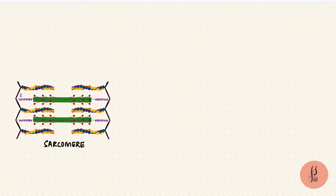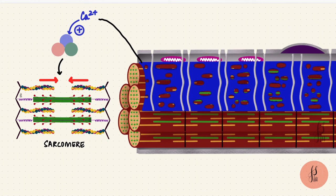What starts the process of contraction is calcium binding to troponin C. For the calcium levels in the sarcoplasm to rise, we need an action potential to excite the muscle membrane. The way these two processes work together is called excitation-contraction coupling.